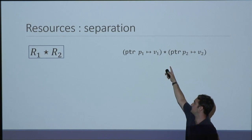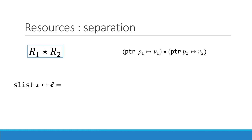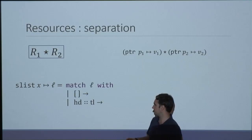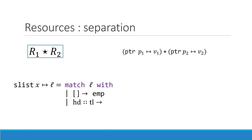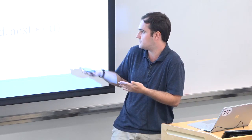We can express that in our Steel framework using our resource language, where we define the star as meaning the footprints are disjoint. So then we can have separation logic inside F-Star with this resource language. Let's define a list: the singly linked list X corresponds to a list L. If L is empty, the resource is just the empty resource. If L has a head and a tail, then the resource is just the pointer X pointing to the head, starred — meaning not aliased — with the rest of the list.